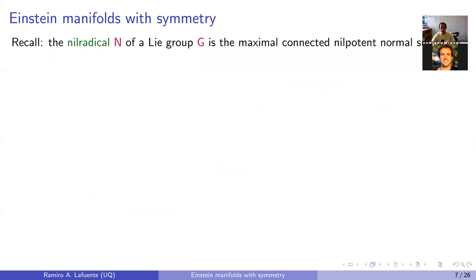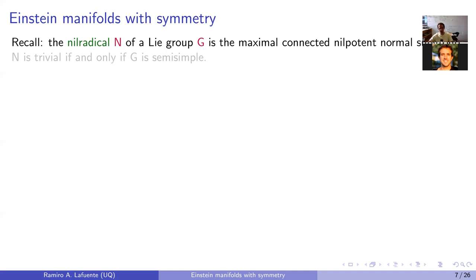Now we move to the title topic of the series: Einstein manifolds with symmetry. Let me present the main result in our study of Einstein manifolds with non-transitive isometry groups. Recall that given a group G, the nil-radical N is the maximal connected nilpotent normal subgroup. It is trivial if and only if G is semi-simple; when G is solvable, N is always non-trivial.